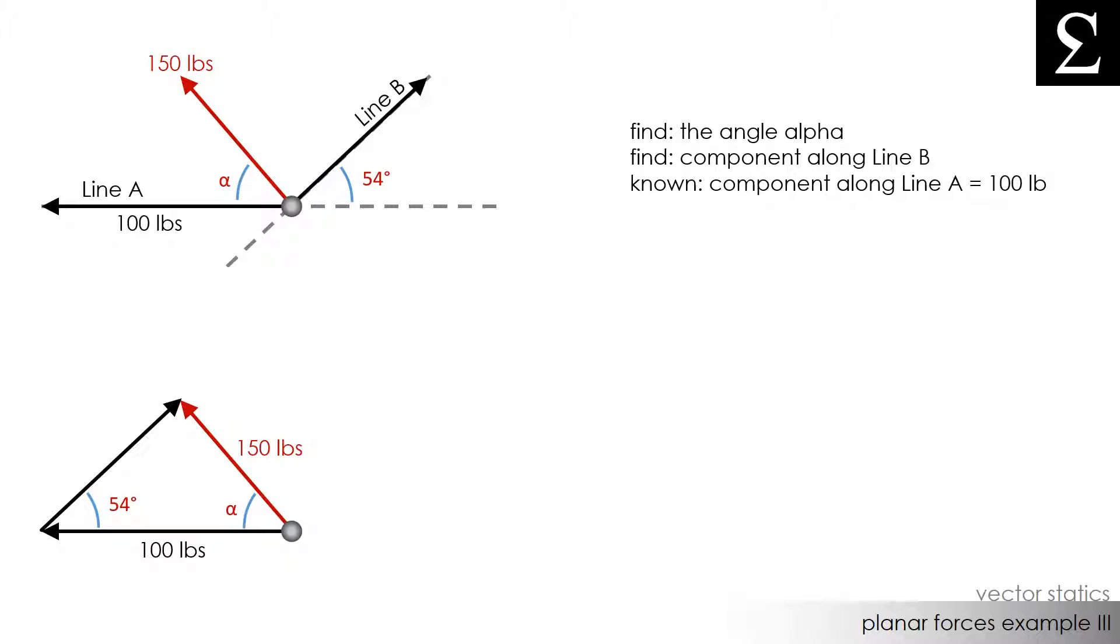We know that the interior angles of a triangle need to add up to 180 degrees. So this angle here, which I'll call delta, is simply 180 degrees minus 54 degrees minus alpha, which simplifies to 126 degrees minus alpha.